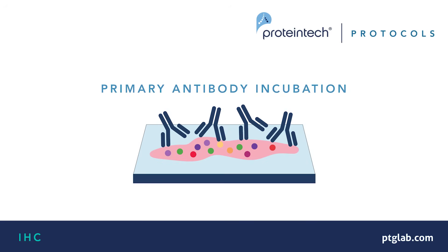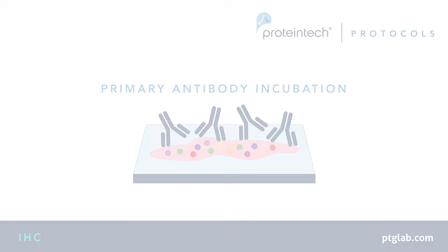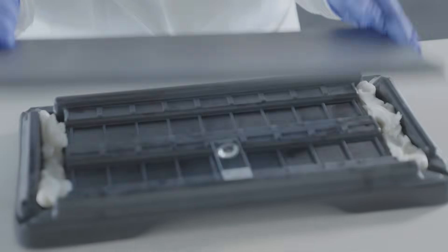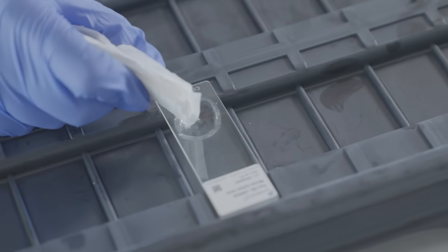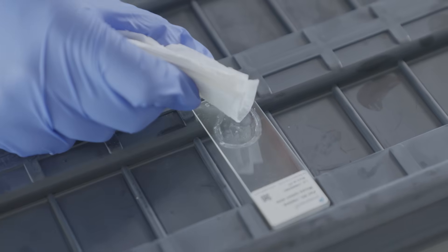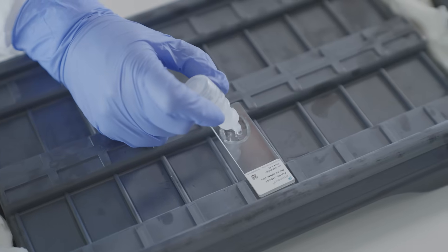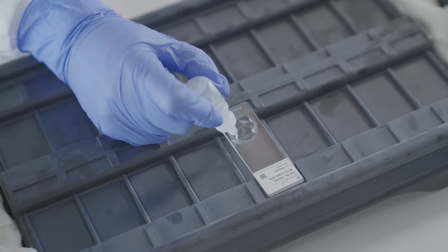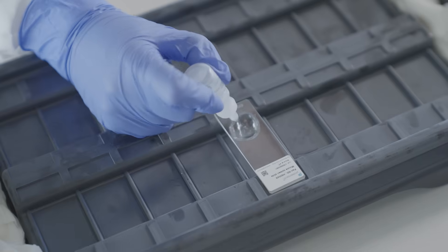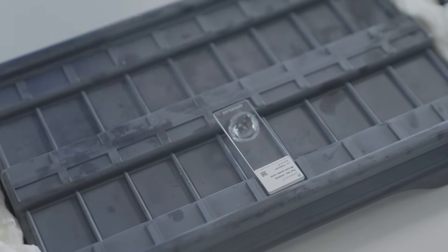The optimal antibody dilution ratio should be predetermined by experimentation. Set up negative controls by omitting the primary antibody incubation step for one slide per experimental condition. Incubate sections with primary antibody diluted in wash buffer for one hour or overnight at four degrees Celsius in a humidified chamber.